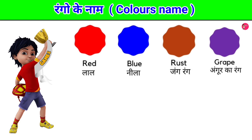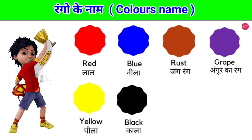Grape — G-R-A-P-E — Grape means anggur karang. Yellow — Y-E-L-L-O-W — Yellow means pila. Black — B-L-A-C-K — Black means color.